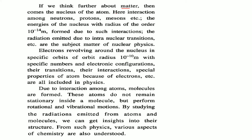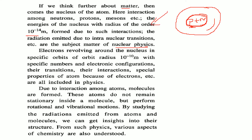If we think about matter, we think about an atom. An atom has a nucleus; the nucleus has protons and neutrons, and the electrons are outside. Protons and neutrons also interact via mesons. The energies of the nucleus, with radius of the order of 10⁻¹⁴ meter, and the radiation emitted due to intranuclear transitions are the subject matter of nuclear physics. Electrons revolve around the nucleus in specific orbits of around 10⁻¹⁰ meter, with specific shells K, L, M, N and electronic configurations. Their transitions, interactions, and special properties of atoms due to electrons are all included in physics.